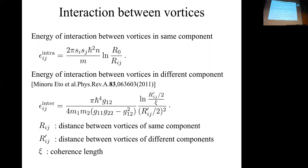In the two-component BEC system, there are two types of interactions between vortices. One is the intra-component interaction between vortices written by this equation, which is the interaction between vortices of the same component. The other is the inter-component interaction between vortices written by this equation, which is the interaction between vortices in different components. This G12 squared minus G11 times G22 part is positive in this case, so the inter-component interaction is always repulsive.